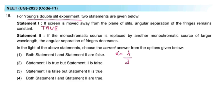What about the next statement now? If the monochromatic source is replaced by another monochromatic source of larger wavelength, angular separation of fringes decreases. As per statement 2 students, we can see that lambda we are increasing, correct? And the value of alpha is decreasing. So this is false, right? Why sir is this false?